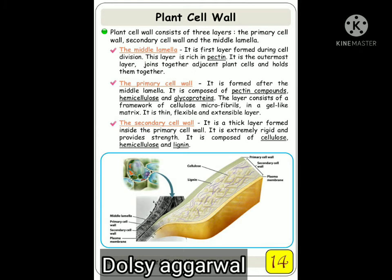Now we come to the plant cell wall. The plant cell wall has three layers: the first is the middle lamella, the second is the primary cell wall, and the third is the secondary cell wall. The middle lamella is the first layer formed when a cell divides — as soon as the cell divides, deposition of the middle lamella begins. The middle lamella is the substance of the middle layer.